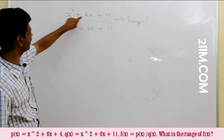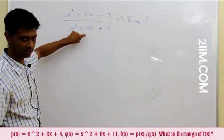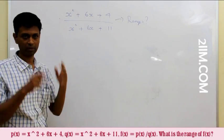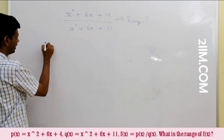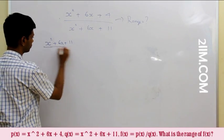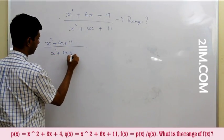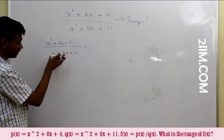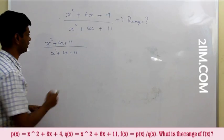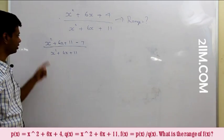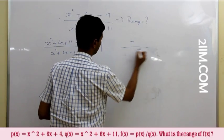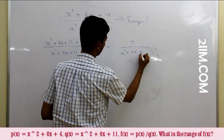What I see here is that there is x² + 6x in the numerator and x² + 6x in the denominator. So I can replicate the denominator expression in the numerator and simplify. I write x² + 6x + 11 over x² + 6x + 11. I've taken the denominator and put it in the numerator, but I only have +4, not +11, so I have to subtract 7. This gives us 1 minus 7 / (x² + 6x + 11).